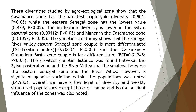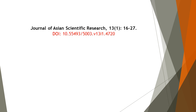The greatest genetic distance was found between the silvopastoral zone and the river valley, and the smallest between the Eastern Senegal zone and the river valley. However, a significant genetic variation within the populations was noted at 64.93%. Overall, there is a low level of diversity in weakly structured populations except those of Tamba and Futa, and a slight influence of the zones was also noted. Thanks for watching this video of Journal of Asian Scientific Research, Volume 13, Issue Number 1.